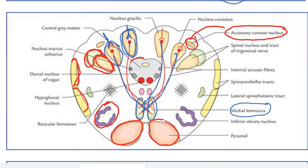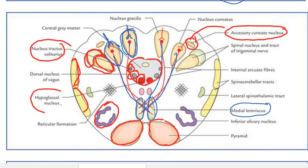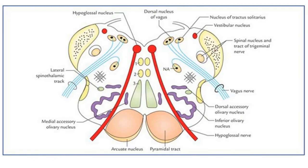The central gray matter of the medulla contains three important nuclei: the nucleus tractus solitarius, the dorsal vagus nucleus, and the nucleus of the hypoglossal nerve. In the next section we will explain the nerves originating from the medulla in detail.